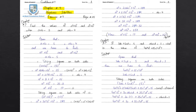Exercise 9, book page number 125, question number 5. Find the values of a square plus b square and a raised to power 4 plus b raised to power 4, when a plus b is equal to 5 and ab is equal to 4.